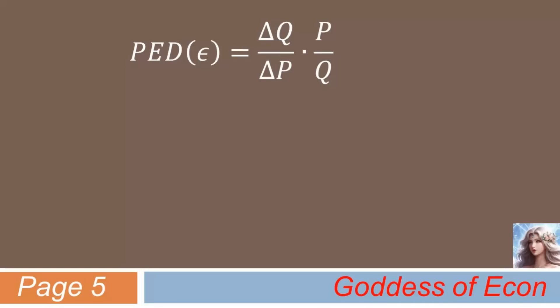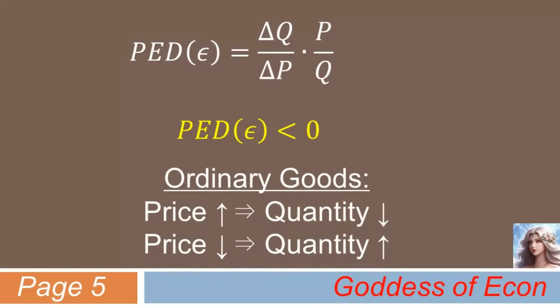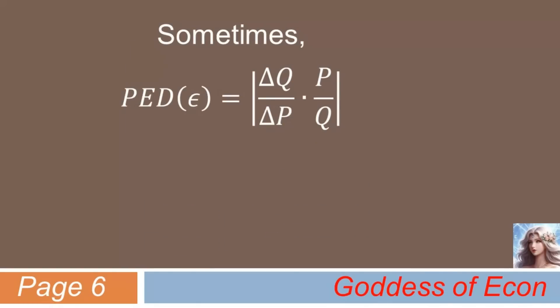I would like to point out that the price elasticity of demand is a negative number. PED is less than zero in almost all circumstances. This is because for most goods, if its price goes up, its quantity demanded goes down, and vice versa. Economists call these goods ordinary goods. There are some exceptions such as Veblen goods, but I will ignore them in today's lecture. Also, sometimes PED is defined as an absolute value for the sake of convenience, but this is not always the case — you'd better pay attention to how it is defined by the textbook you're supposed to follow.